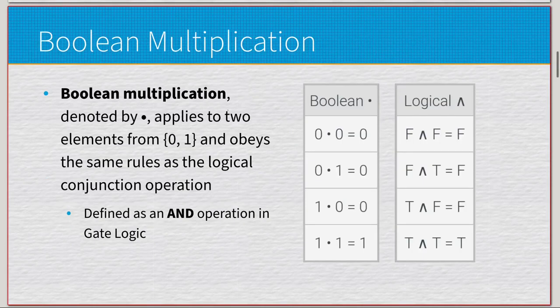Here we have Boolean multiplication, which is noted by a dot operation and applies to elements from the alphabet {0, 1}. It obeys the same rules as a logical conjunction operation, or in gate logic we call it an AND gate. So just like conjunction, it operates in a similar fashion: 0×0=0, 0×1=0, 1×0=0, 1×1=1. It's literally the exact same as our conjunction operation.